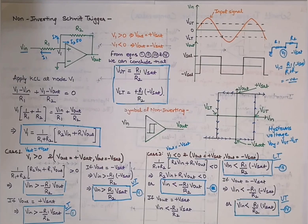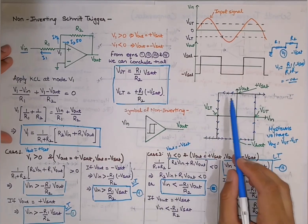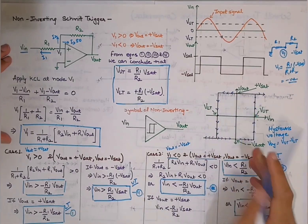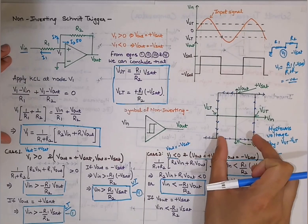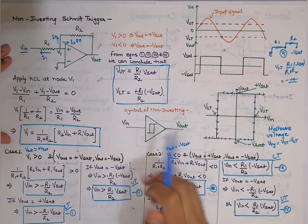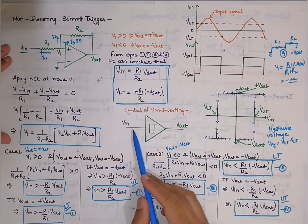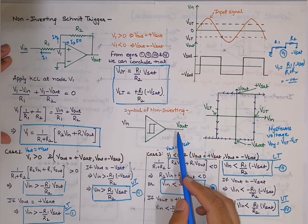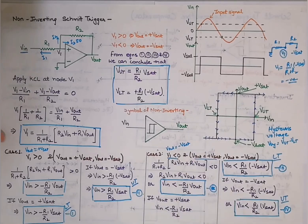The symbol of the non-inverting Schmitt trigger is this hysteresis curve drawn inside a triangle with one input and one output.